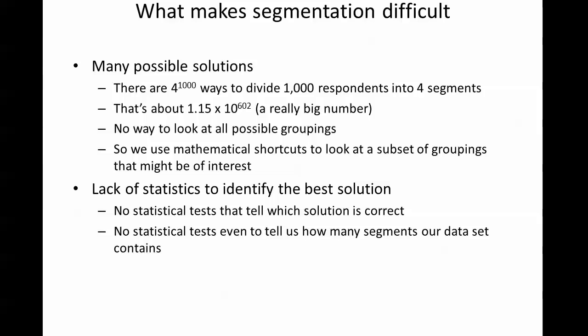Let's say we were in the position that we're never actually in in real life — we have 1,000 respondents, and we know for a fact going into it that those 1,000 respondents sort themselves into just four segments. Even knowing that information, there's about 10 to the 602 power — that's a one with 602 zeros after it — different ways of sorting 1,000 respondents into four segments. That's a really big number. It's bigger than the number of atoms in the universe.